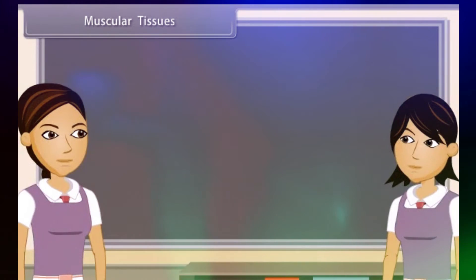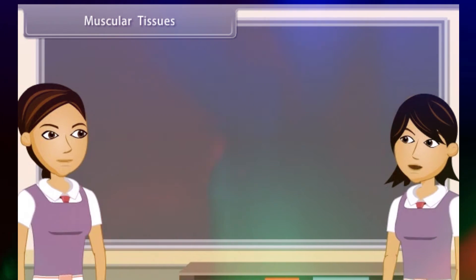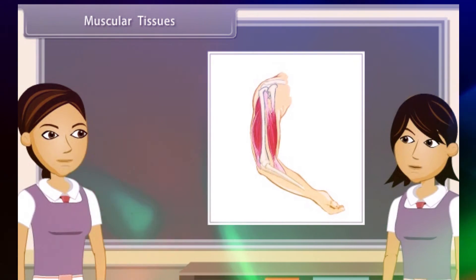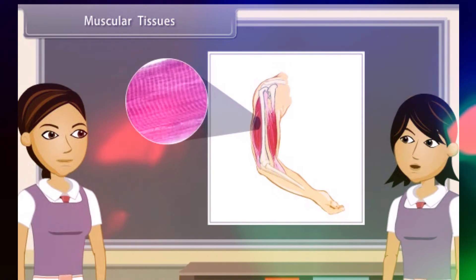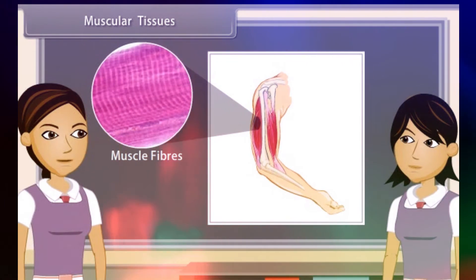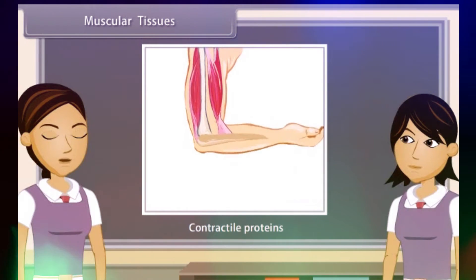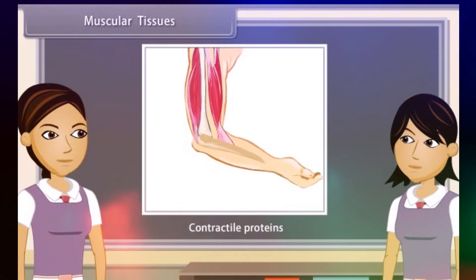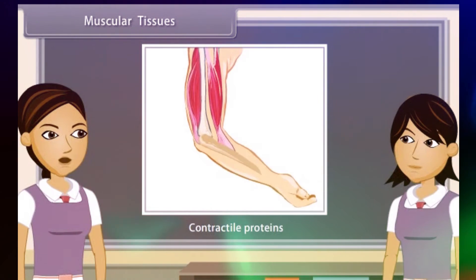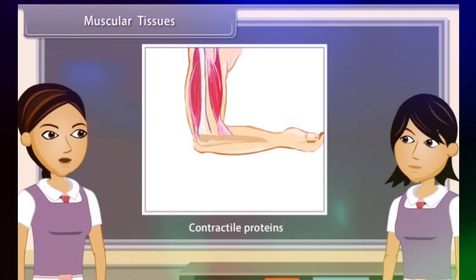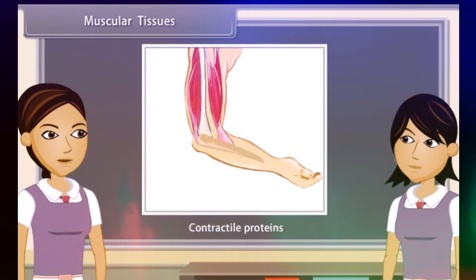Muscular tissue consists of elongated cells, also called muscle fibers. Muscle contains special proteins called contractile proteins. When these proteins contract and relax, movement is caused.